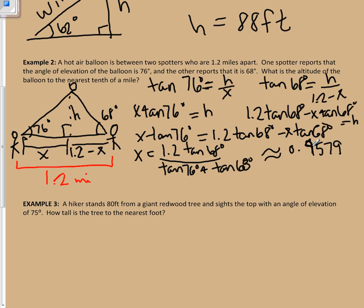That gives me x, but I want h. What I want is that height. Now remember, let me tell you where x was again. This is x. That isn't what I want. I want h. I want this. So to find h, I'm going to come back to here now that I know what x is. And I'm going to plug that in and I can find out what h is. So h is going to be equal to 0.4579 tangent of 76 degrees, which to the nearest tenth of a mile is 1.8 miles.